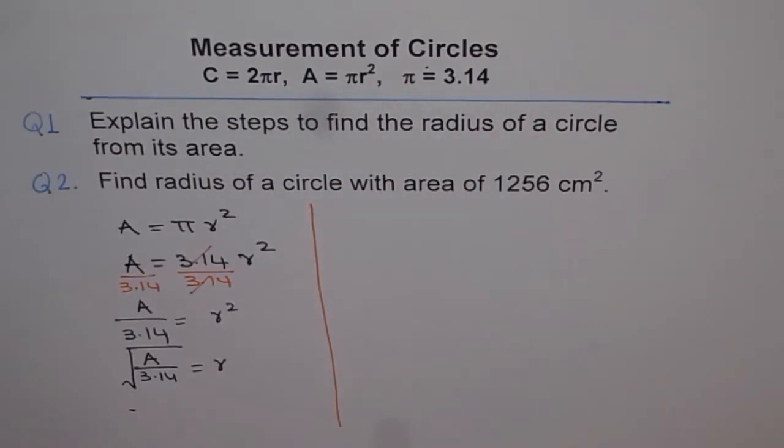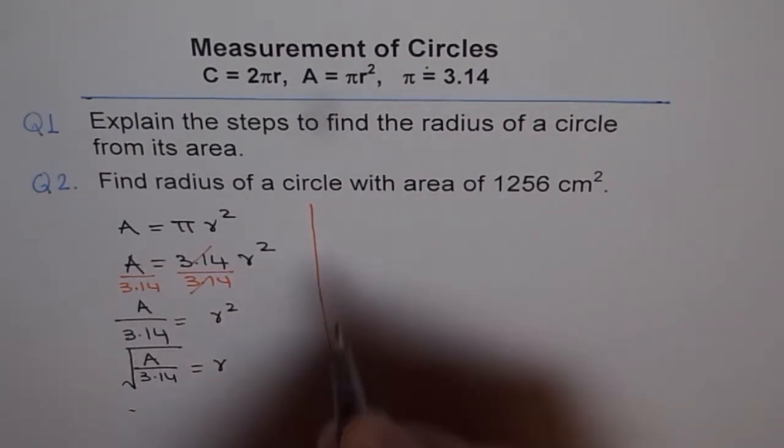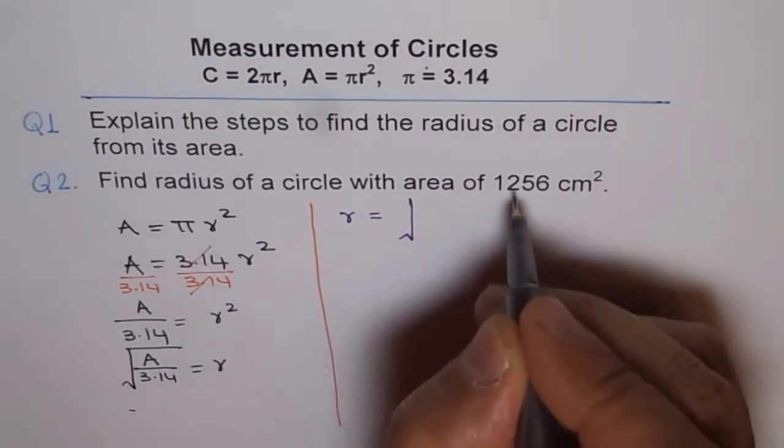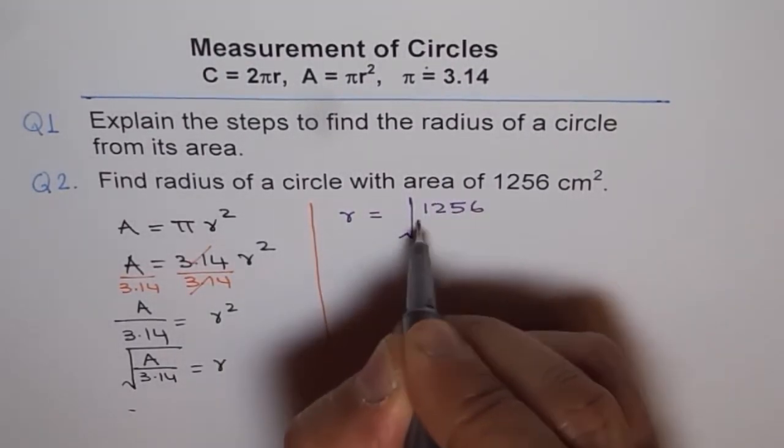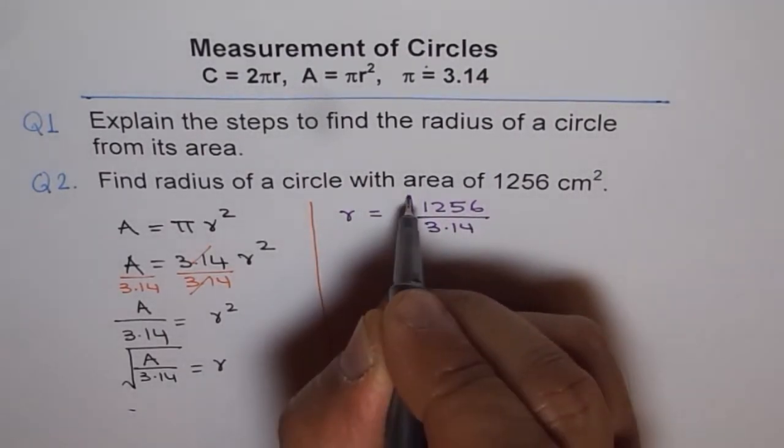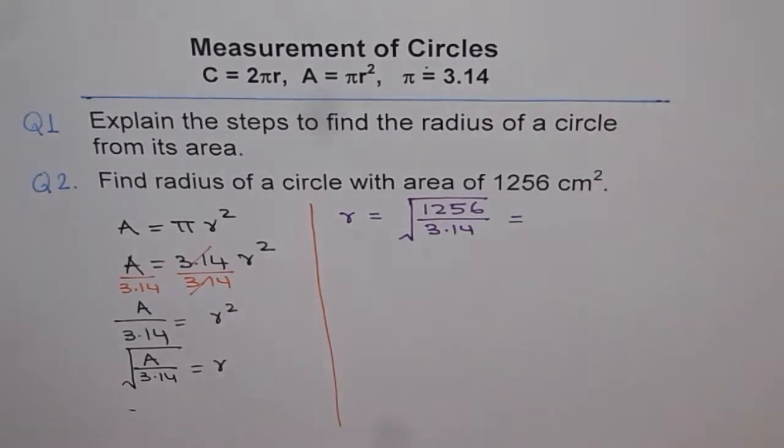So if I apply this formula, I get r the radius equals to square root of area which is 1256 divided by 3.14. Now we can use the calculator.